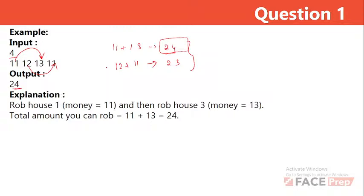This is a classic dynamic programming problem. The goal is to find the maximum amount you can rob from a row of houses, given that you cannot rob adjacent houses. The input is an array 'a' where a[i] represents the amount of money in the i-th house, and the task is to determine the maximum amount without robbing adjacent houses.